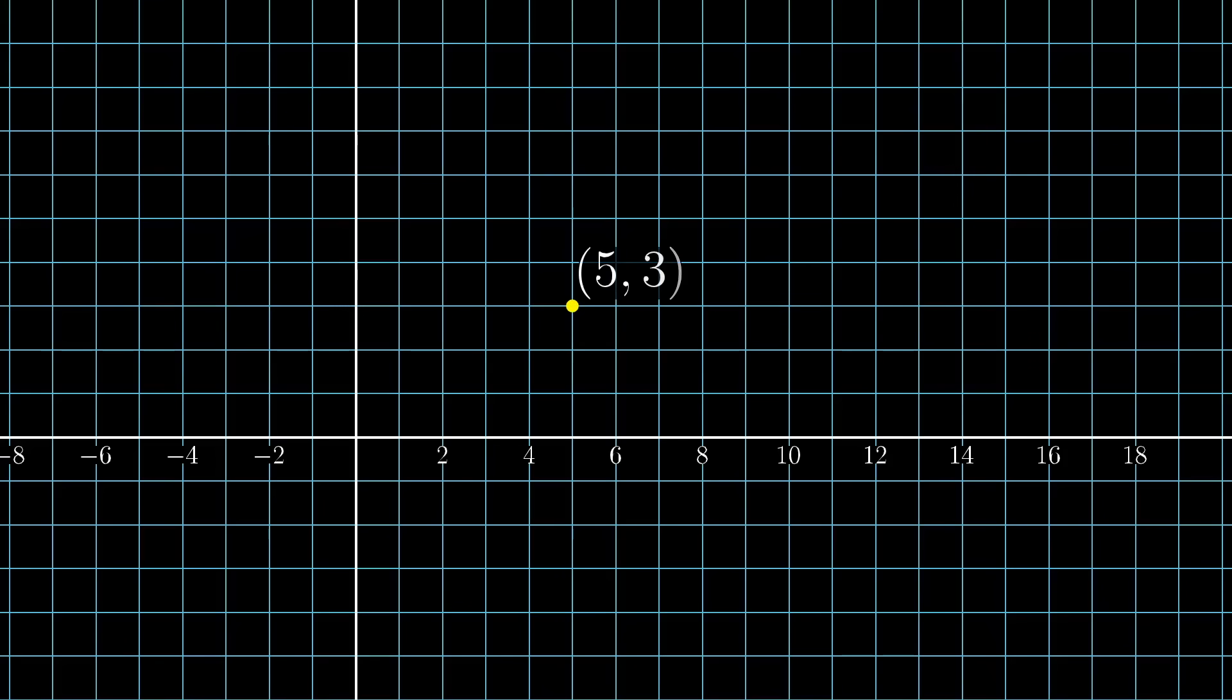Anyway, back to the question of finding whole number solutions. Start by reframing the question slightly. Among all of the points on the plane with integer coordinates, that is all of these lattice points where grid lines cross, which ones are a whole number distance away from the origin?